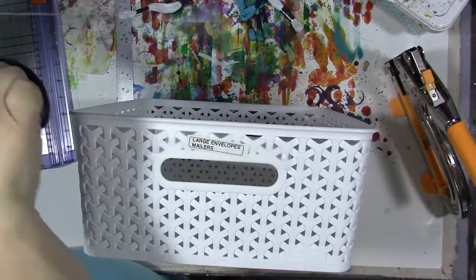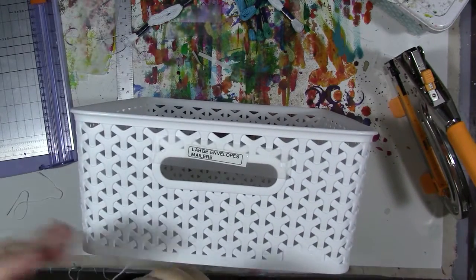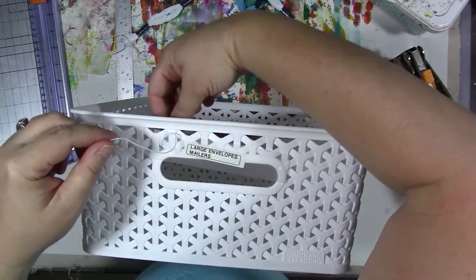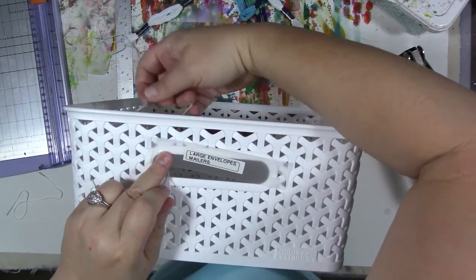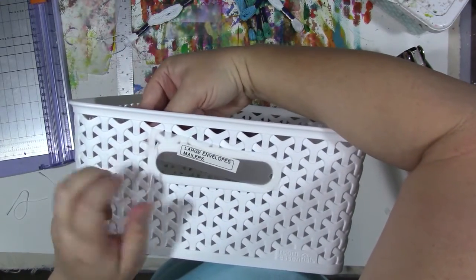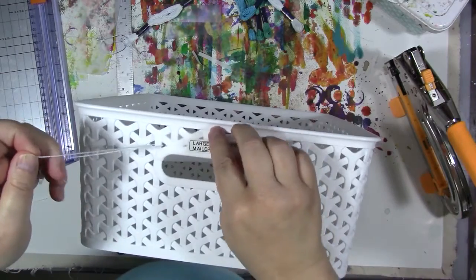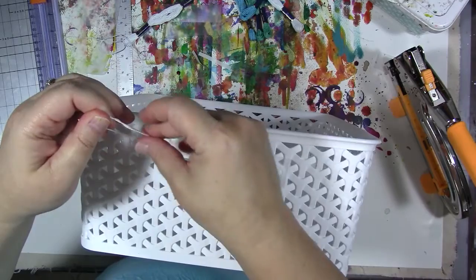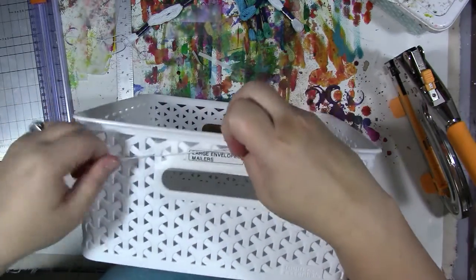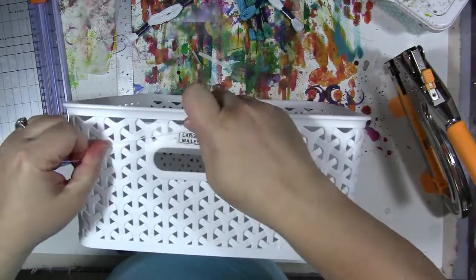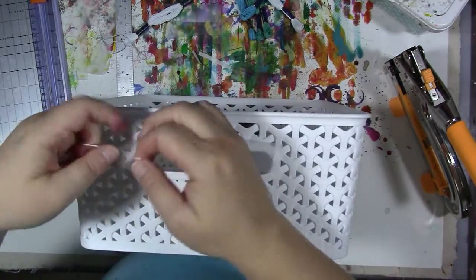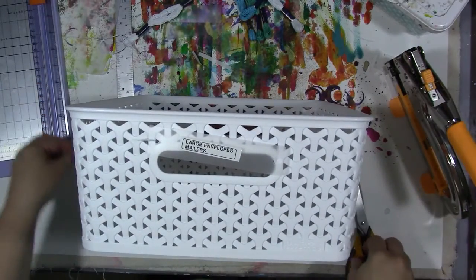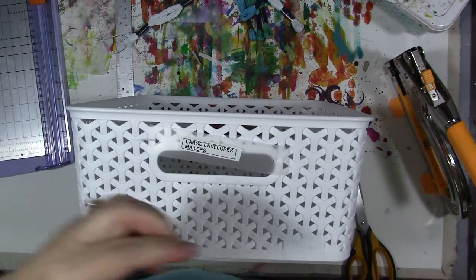I'm going to cut a couple of pieces and string it through the hole in the tag and the hole in the basket. Then I'm going to go into an adjacent hole and tie it in a knot. Easy peasy. Then just trim it short. Love it. All right, let's do the other side.